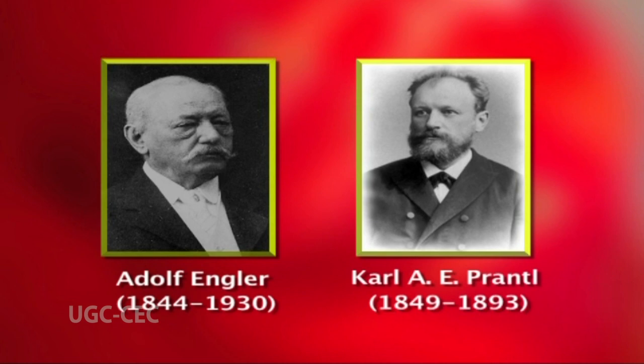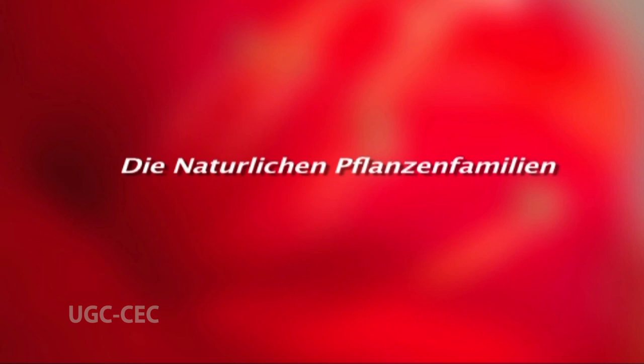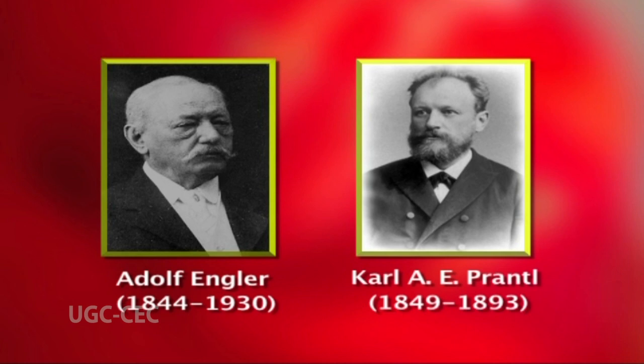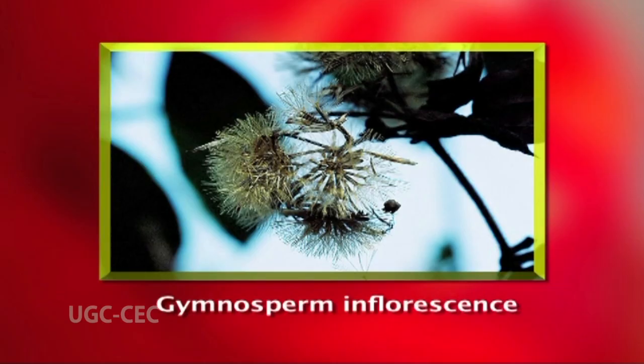Adolf Engler and Karl A. Prantl of Germany published an evolutionary system in their monograph 'Die Natürlichen Pflanzenfamilien'. Their classification is based on evolutionary sequence as well as genetic relationships among different groups of plants, and it employs as many taxonomic characters as possible. Charles Darwin's concept of the origin of species had given enough stimulus for the creation of this evolutionary system. Engler and Prantl made attempts to rectify the shortcomings of Eichler, Bentham and Hooker's classification.